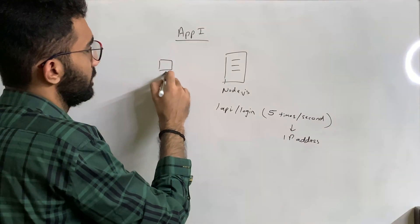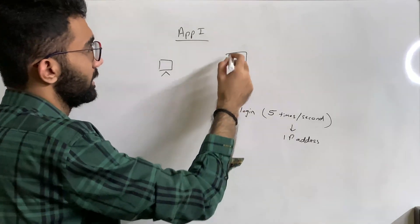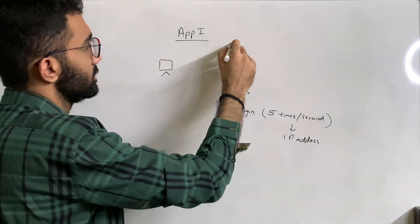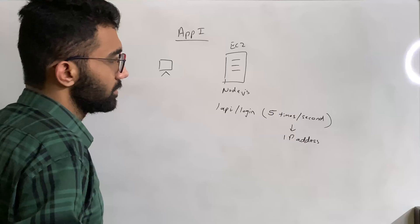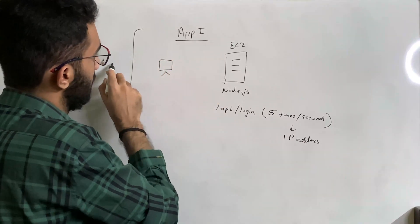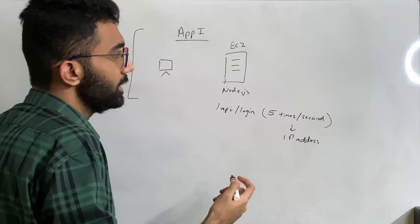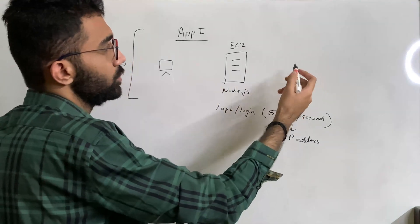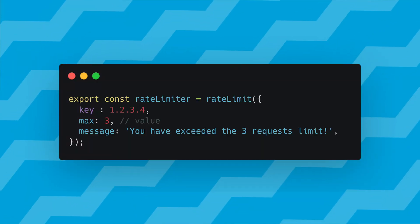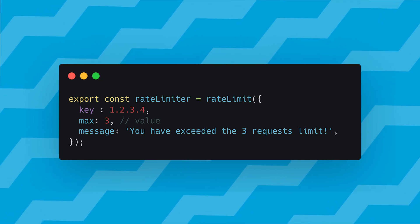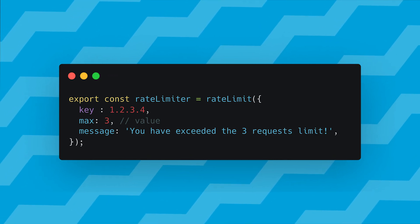So let's say this is your client, and this is the server which you have, which is like a single server, single EC2 instance, or what have you, and you want to implement this logic. Now in the stateful way, this is the app one example, what you would probably do is inside Node.js, you would probably have a rate limit object, where the key is an IP address, which would be like 1.2.3.4,